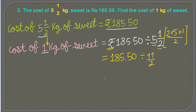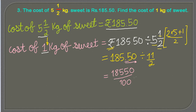Now, as you can see, 185.50 is a decimal and we are dividing a decimal number by a fraction. In this case we are going to convert it to a decimal fraction — we multiply by 100 and put 100 as the denominator, giving 18550 upon 100. This is the same value since we moved the decimal two places and compensate with the denominator. Now we are dividing by 11 upon 2.